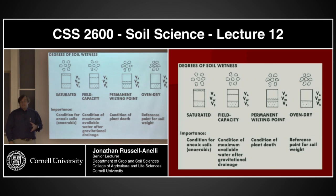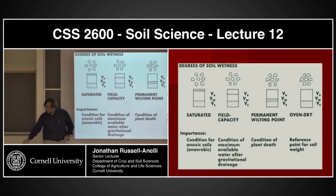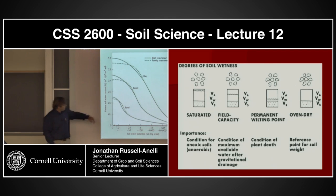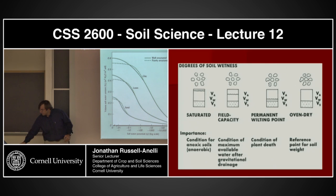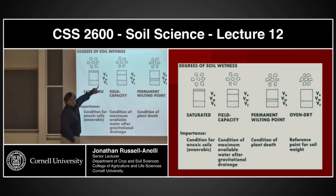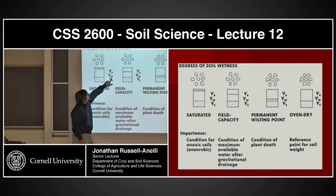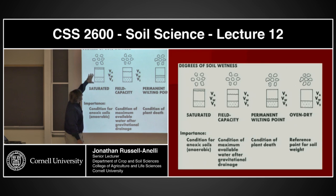There are basically three stages of this curve. The first stage is right here — this box represents a volume. Part of that volume is solid, part is water, part is air. But basically the soil is saturated.